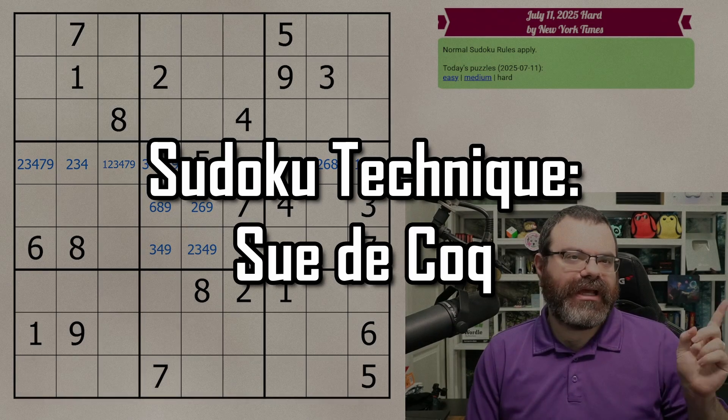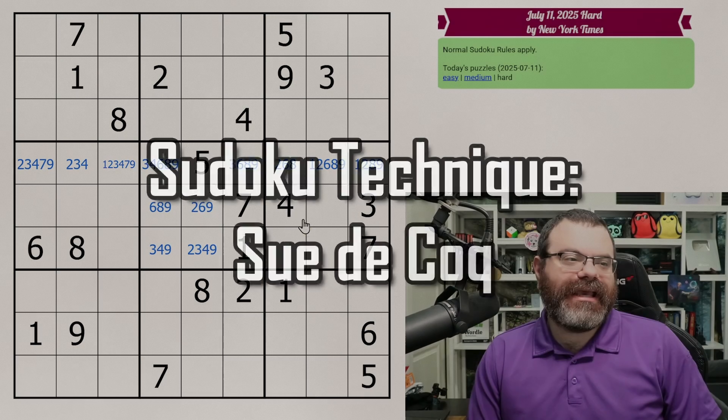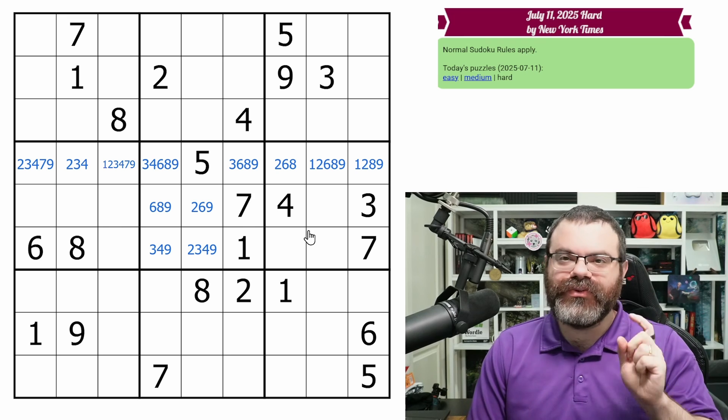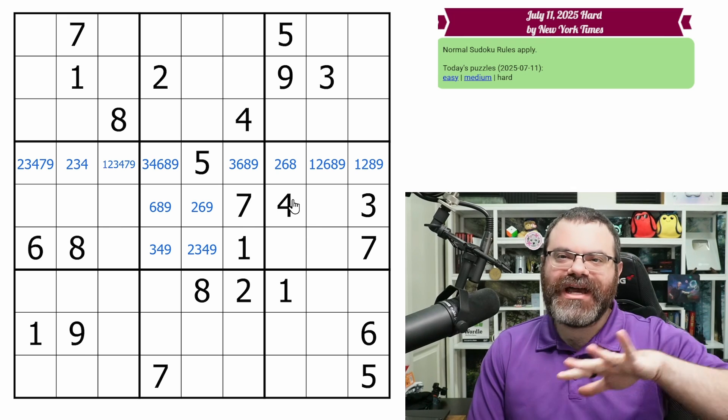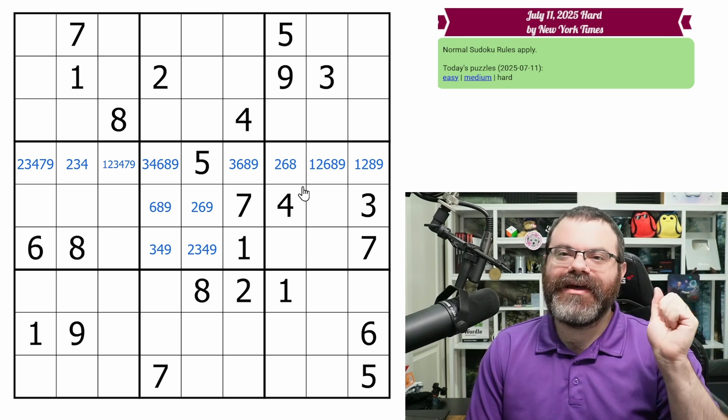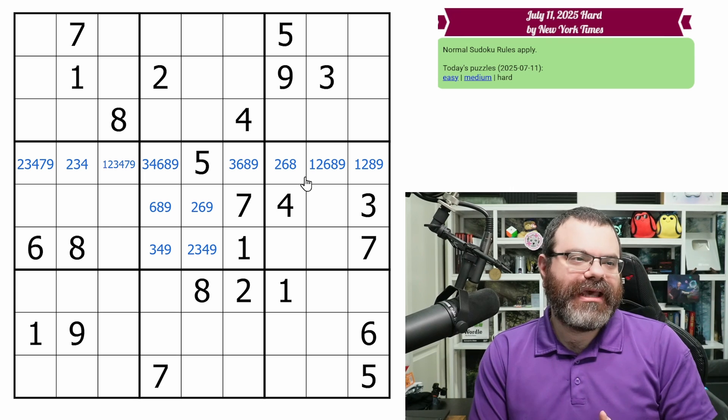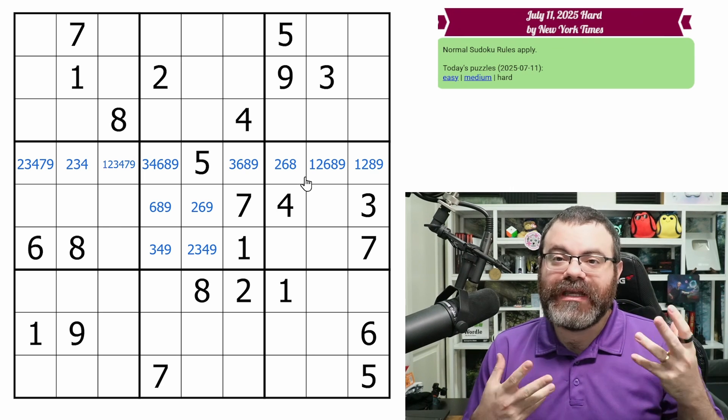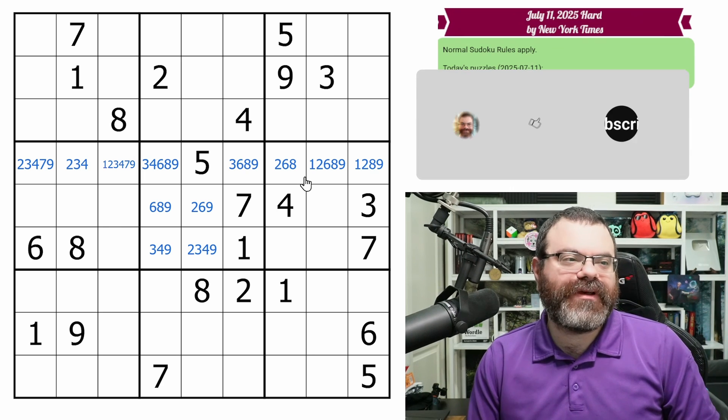Today's New York Times Hard Sudoku for July 11th had a fun technique in it that you do not have to use. You can solve the entire puzzle without finding this, but I thought this would be a nice opportunity to describe how a certain advanced technique works that I think is a really fun one.